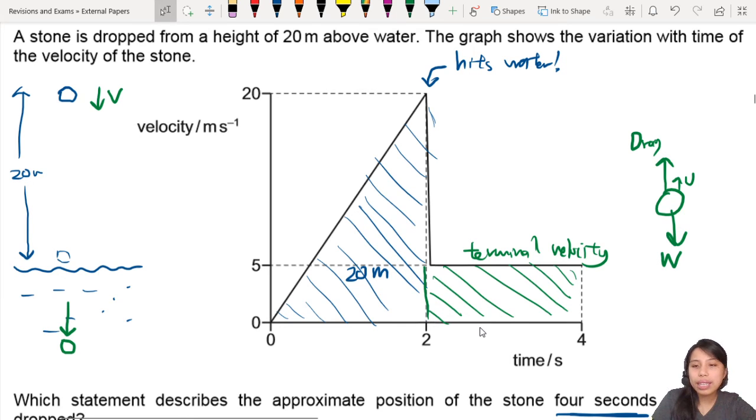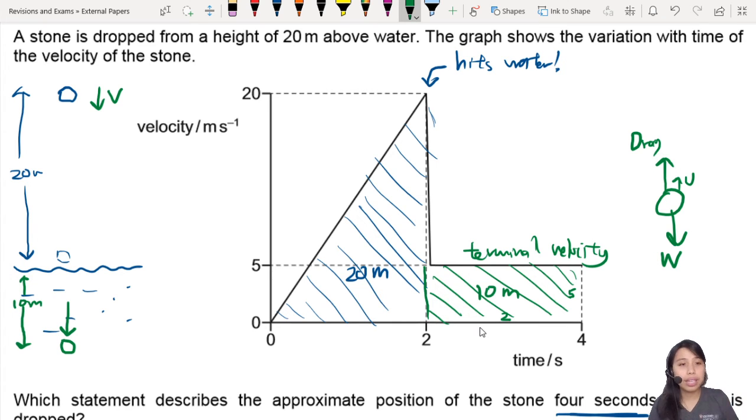And what's the area here? The area of this rectangle, you can approximate roughly... This is what? Length of 2, height of 5. So it is about 10 meters. So it means this stone traveled 10 meters like this. After 4 seconds. So remember, 2 parts: 2 seconds hit the water, another 2 seconds it travels 10 meters down.